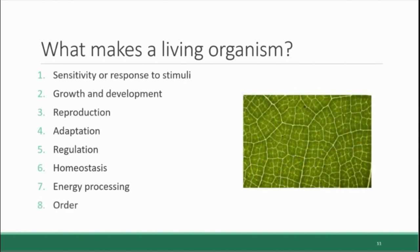And lastly, living things have order — a highly organized structure with uniform features across all living things. For example, all living things are made of cells, which is the basic unit that makes them up. You can see plant cells here under the microscope, but animals, fungi, bacteria, and any living organism you can think of are also made of cells.